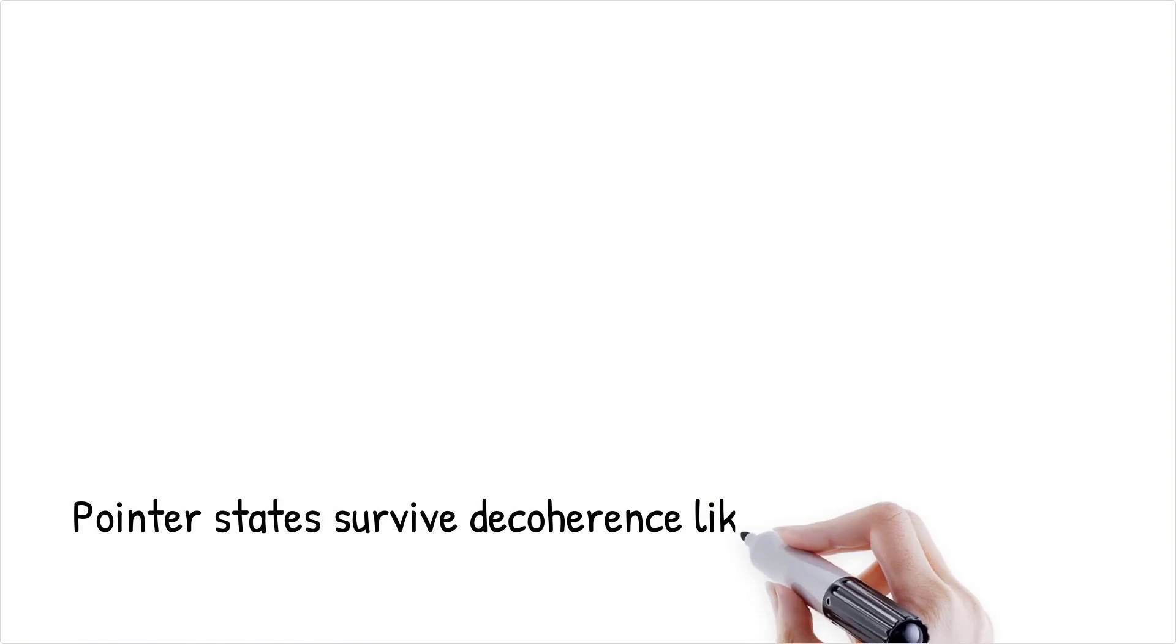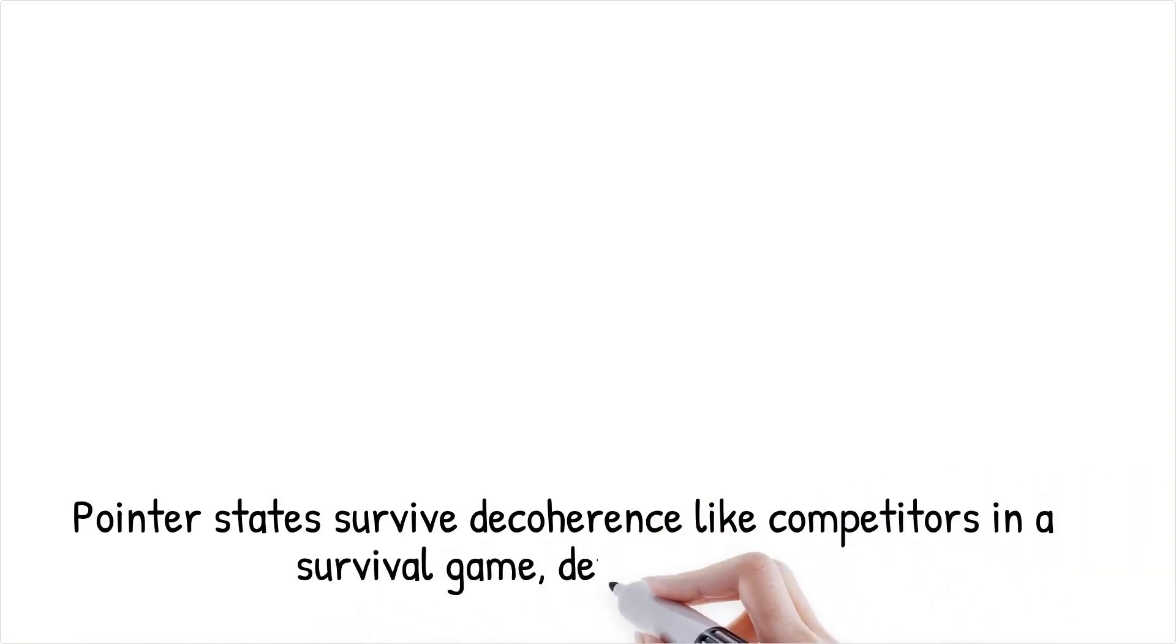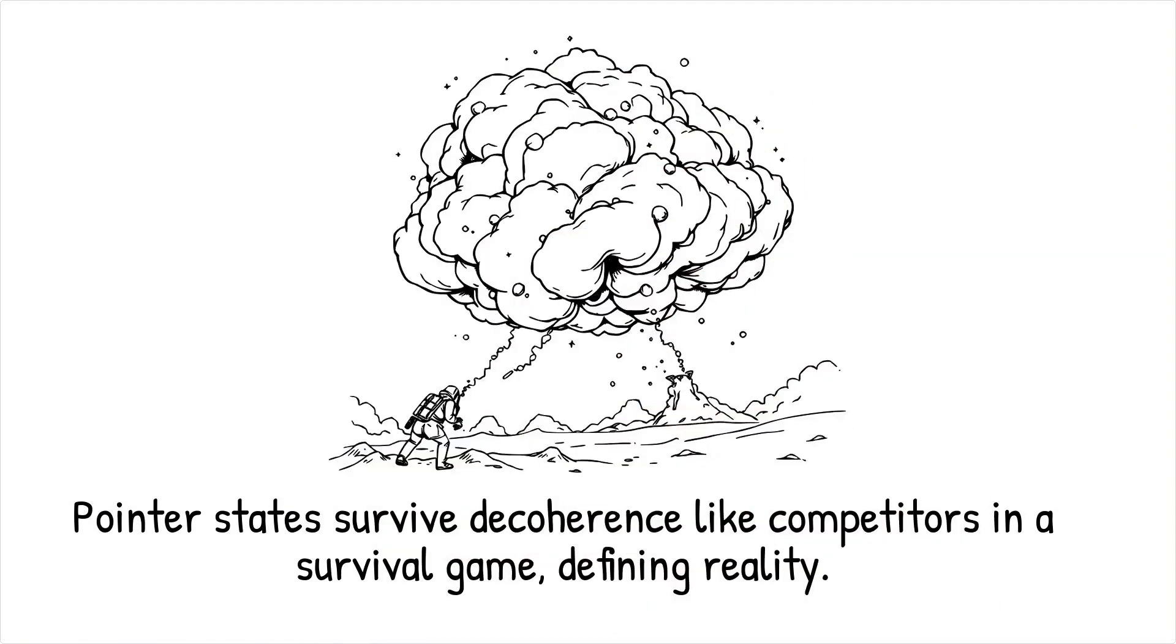Example: In a turbulent gas cloud, the position of a particle is more likely to survive as a pointer state than its phase information, which is highly sensitive to decoherence.